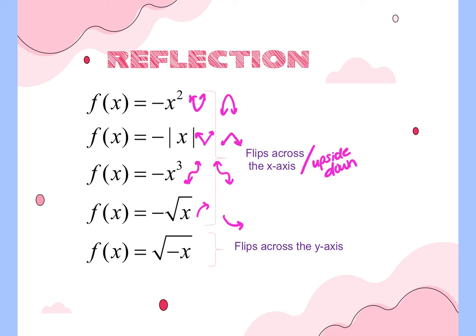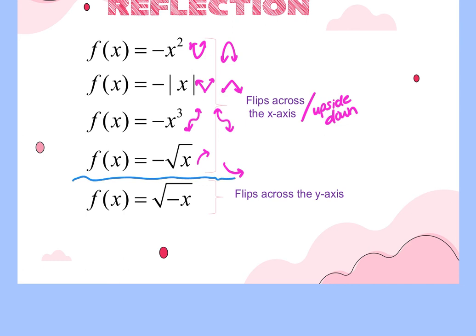For multiple choice, a reflection will be specified as over the x-axis or y-axis. Flipping upside down corresponds to a reflection over the x-axis. If the negative is inside the function — like under the square root — it flips across the y-axis. For the square root, a negative inside points it to the left instead of right. On an absolute value V, it changes the direction of the horizontal shift. For a cubic function, negative on the front and negative inside look the same because flipping upside down or left-right gives the same result. The biggest visible difference is with square roots, which will point left instead of pointing down.